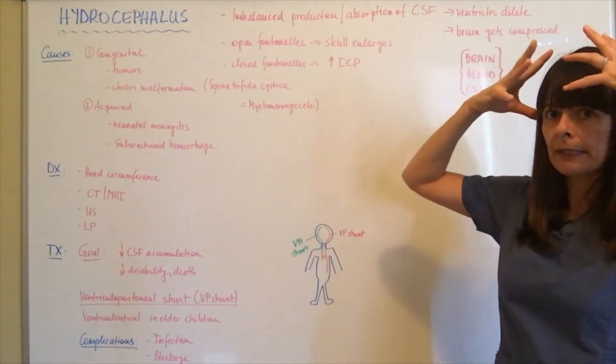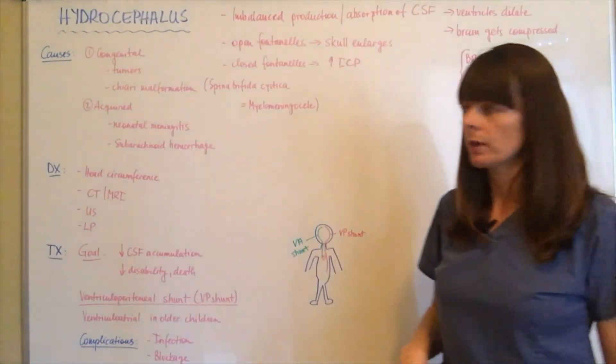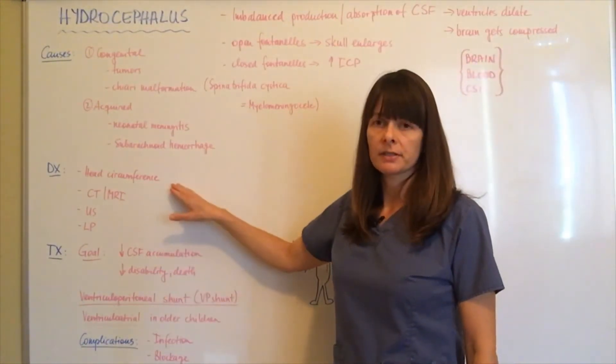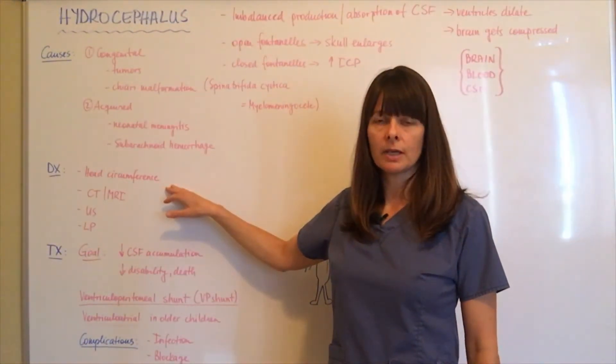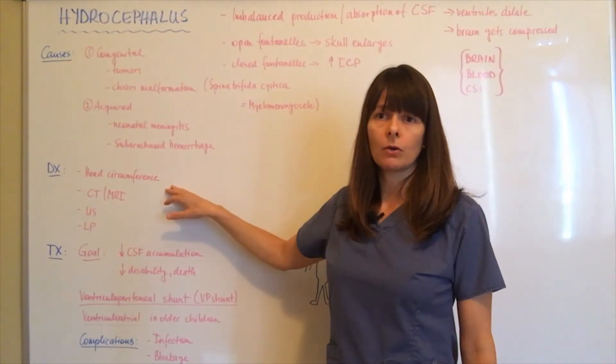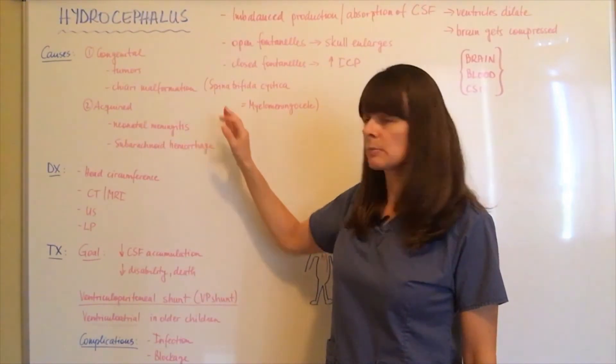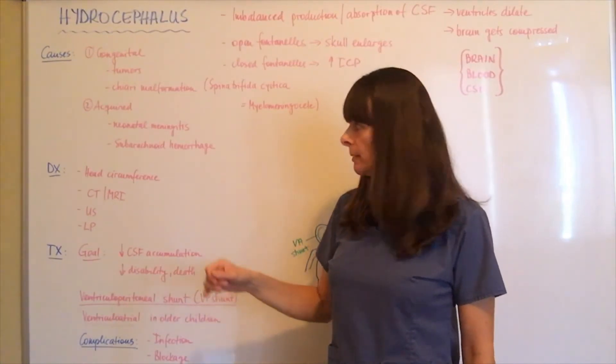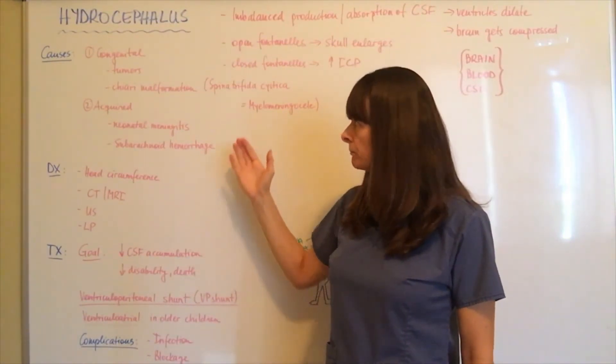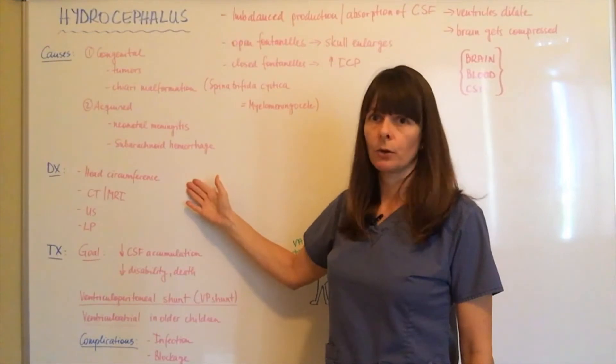How do we diagnose this? That's why we measure head circumference in infants at every visit. Sometimes it's pretty obvious if the patient has spina bifida that's detected during prenatal checkups or other abnormalities. Head circumference is number one.